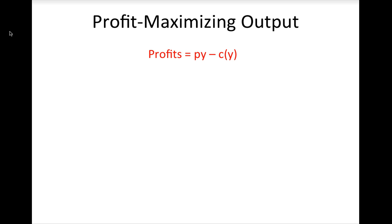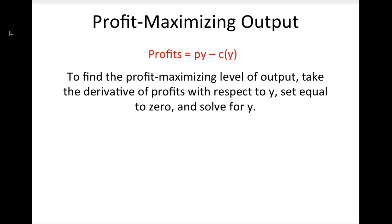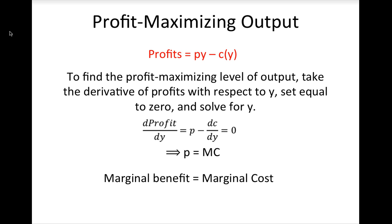To solve for the firm's profit maximizing level of output, we simply take the derivative of the profit function with respect to output, set the derivative equal to zero, and solve for Y. When we do this, we find that at the optimal level of output, the market price for the firm's output equals the firm's marginal cost of that unit. The market price is the firm's marginal benefit for each unit of output, since the firm gets P dollars of revenue for each unit it produces. The marginal cost is the additional cost of producing the last unit of output. Thus, the firm's profit maximization rule — produce output until market price equals marginal cost — is another example of the marginal benefit–marginal cost rule from introductory economics.